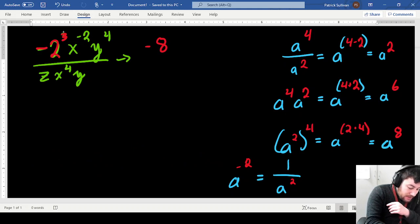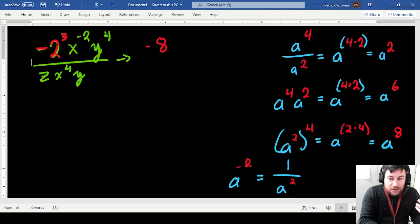All right, now let's take a look at our x value. So I have x to the negative second over x to the fourth. Now again, there's a couple different ways you can approach it. I think for most students, this is the simplest way to think about it.